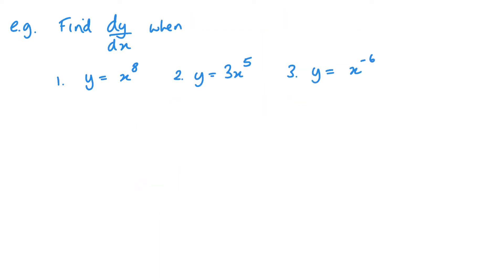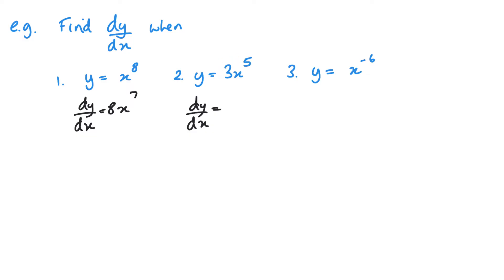Let's look at a couple to get us started. First, y equals x to the power of 8 — when I differentiate this, it becomes 8x to the power of 7. You multiply by the power, take one away from the power. Number 2: 3x to the power of 5. Differentiate — multiply by the power, take one away from the power. Multiply by 5 gives me 15x to the power of 4.